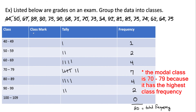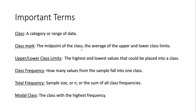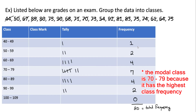The next thing we'll talk about is how to find the class mark, which we're going to need for graphing a histogram and a frequency polygon in the next one or two videos. Going back to the definition, the class mark is the midpoint of the class or the average of the upper and lower class limits. To find it, take your lower limit and your upper limit, add them together, and divide by 2. So the class mark for the first class is 40 plus 49 divided by 2, which works out to be 44.5, and then we do the same thing for the other classes.